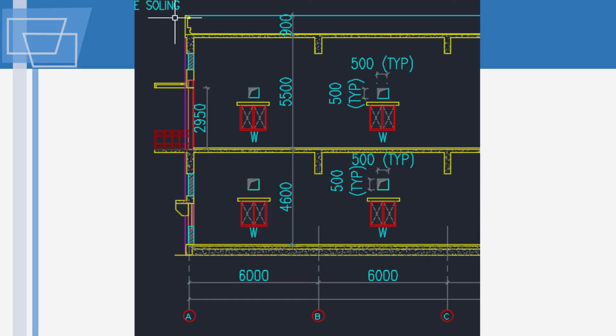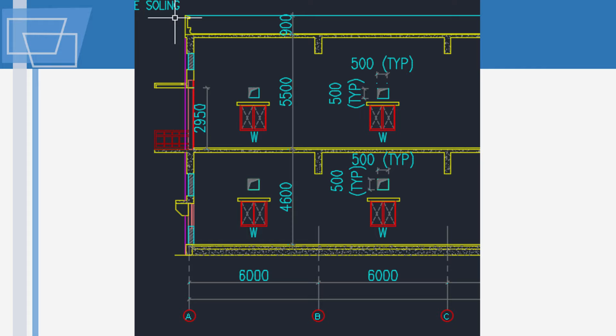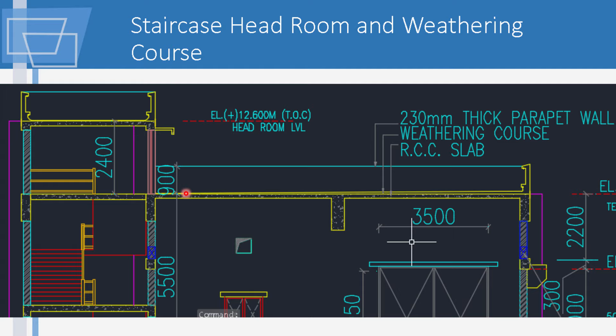In this drawing, we have some windows and the elevation markings. Windows are many times measured in numbers — the number of windows and the size to which they are done. There could be openings for ventilators as well. One of the important things this drawing provides is the specification. It says you will have a weathering course, an RCC slab, and a 230 mm thick brick wall. Specifications include anti-termite treatment, painting, jointing, and miscellaneous items.